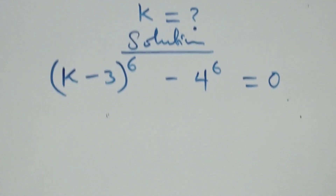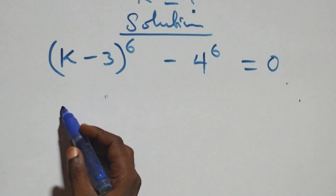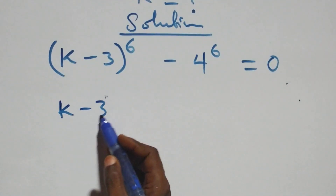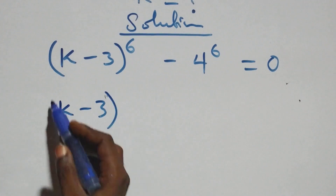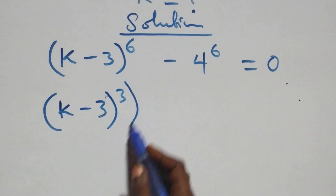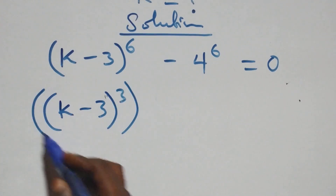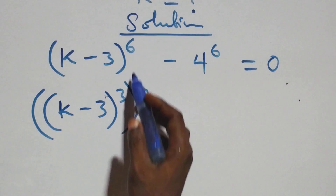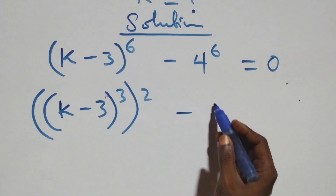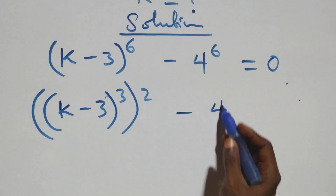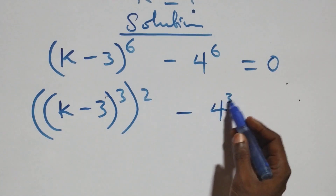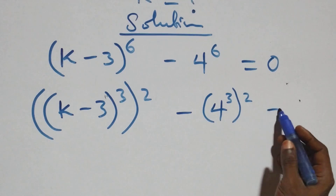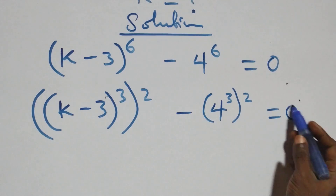The next step: we can rewrite this as (k minus 3) all raised to power 3, then all raised to power 2, minus 4 raised to power 3, then all raised to power 2, equals zero.